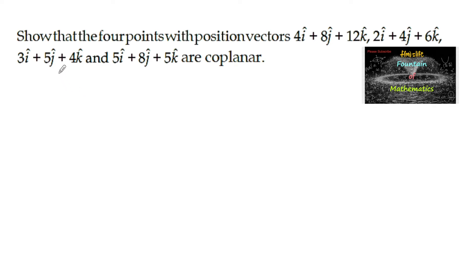Show that the four points with the position vectors 4i + 8j + 12k, 2i + 4j + 6k, 3i + 5j + 4k, and 5i + 8j + 5k are coplanar.